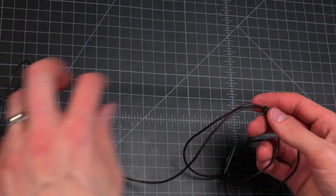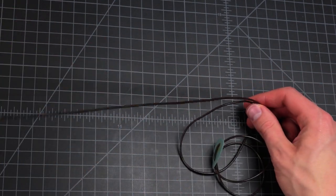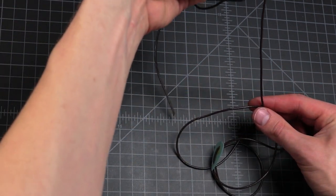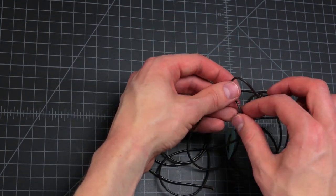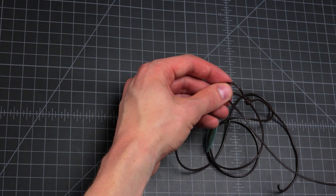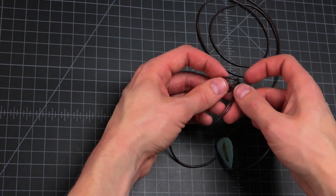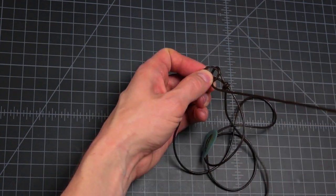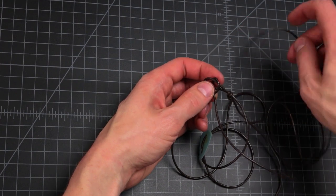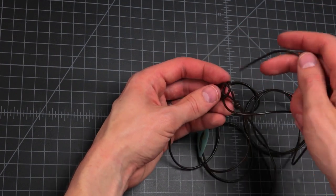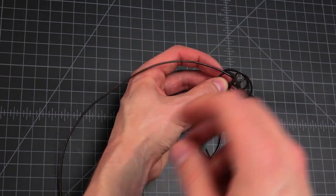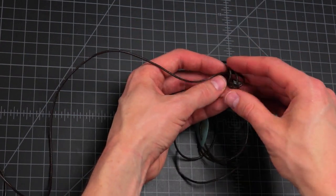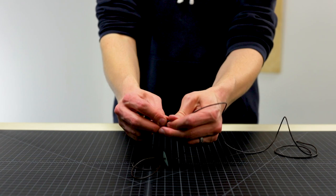Then once that knot's tied, go ahead and take your other end. So this is our working end here, and here's our bracelet end. So you want to tie this end onto it. So once, twice around, and poke that hole through both loops. Cinch that down right next to your other one.